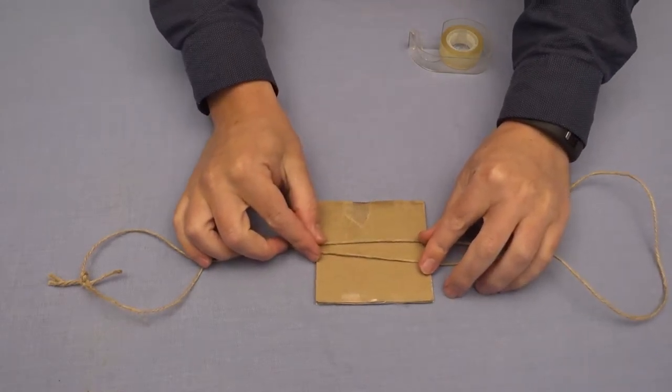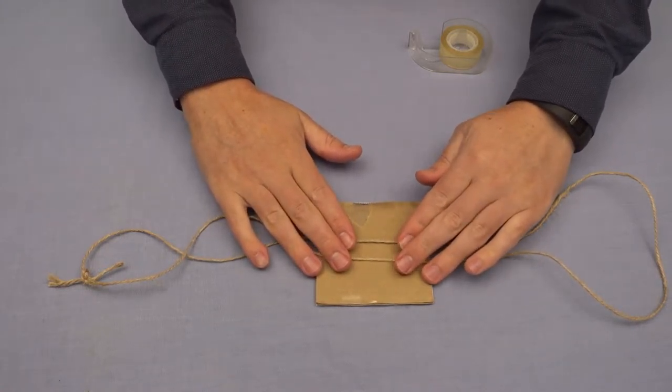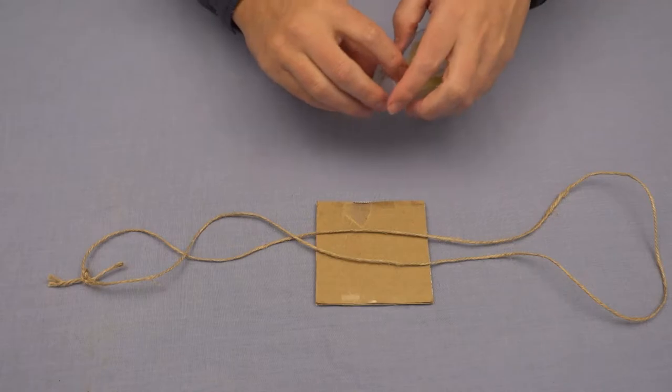You want a little bit of distance between the two strings, about a centimeter or so. And don't be stingy on the tape here, you want to make sure it's stuck down really well so it doesn't come apart when we're twisting it up.